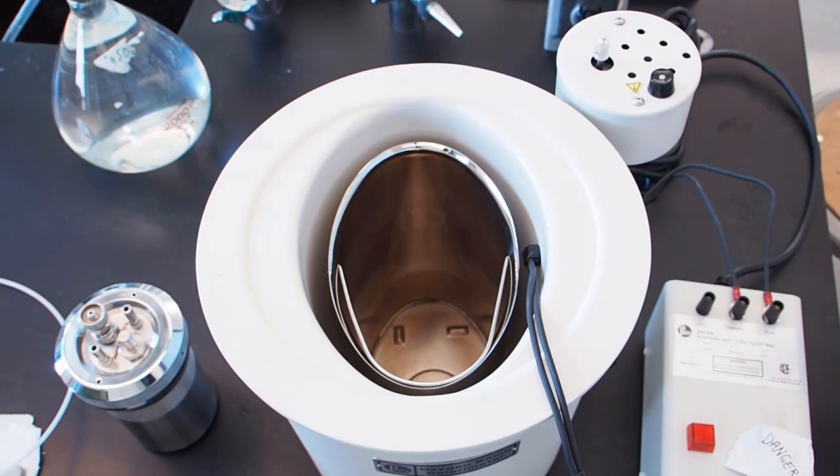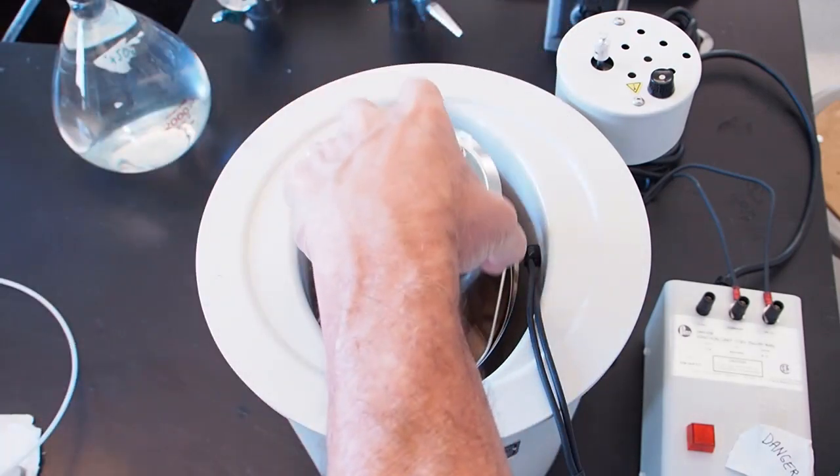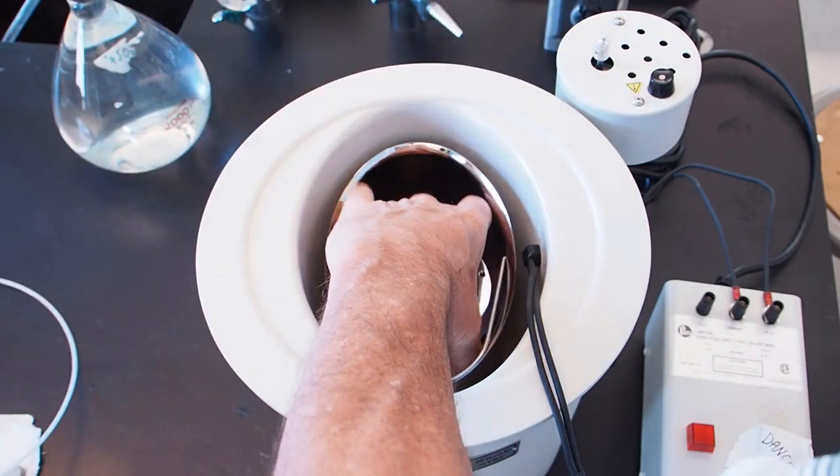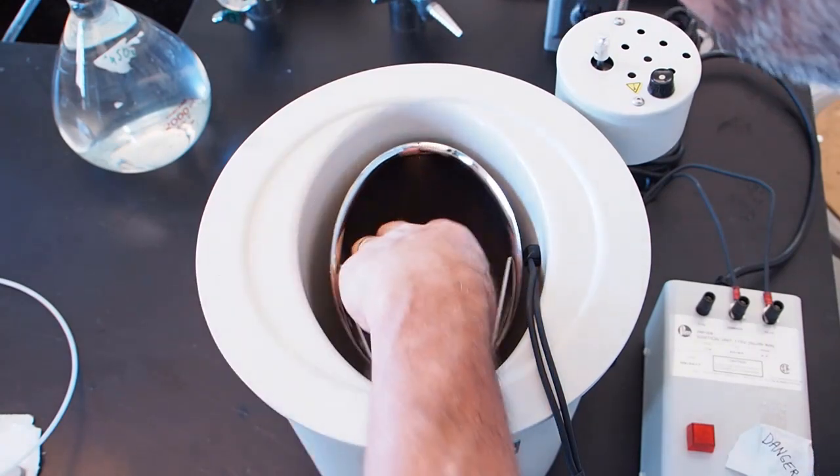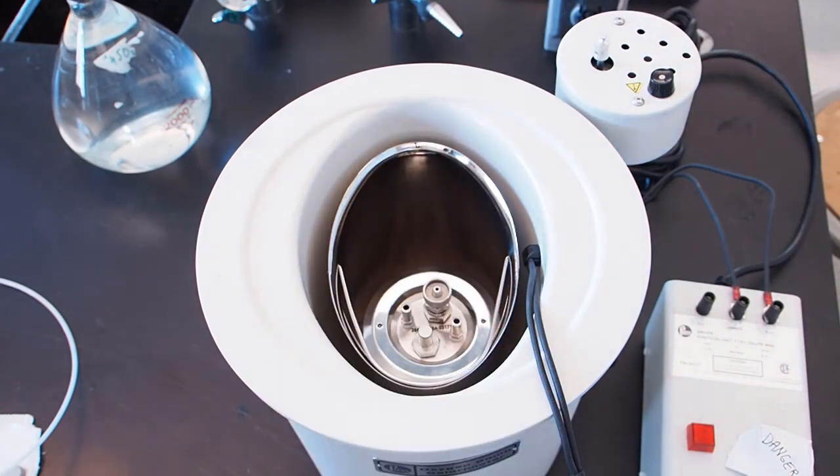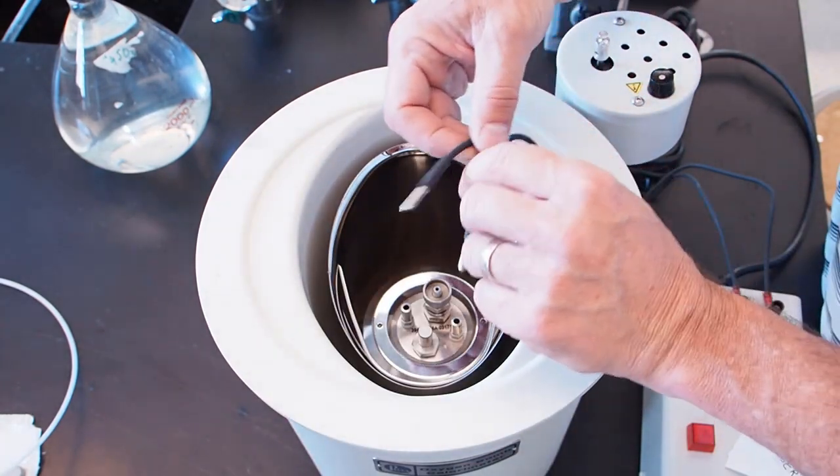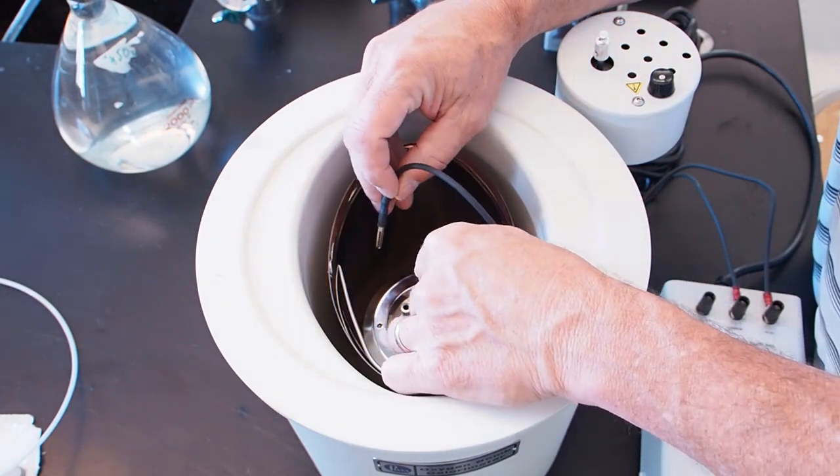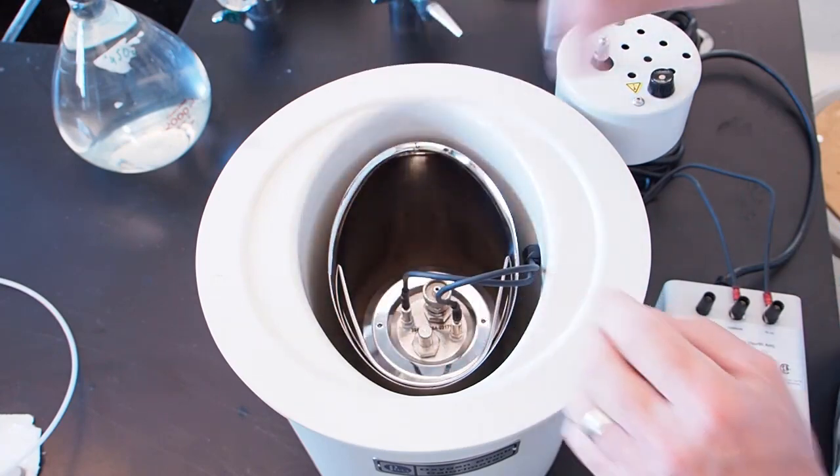Okay, so now we're going to assemble the whole system. So we're going to take our bomb, which has our sample and the oxygen in it now, and that goes right in the middle here. And then it sits snugly there. And then what's going to happen is we're going to first connect the two leads that are the electrical leads that are going to be used for igniting the wire, the ignition wire, which will then ignite the dog food.